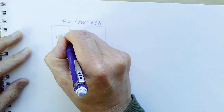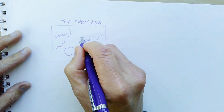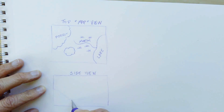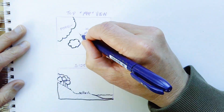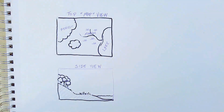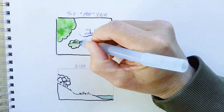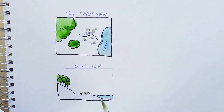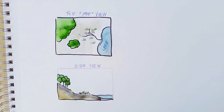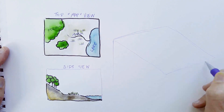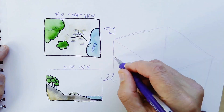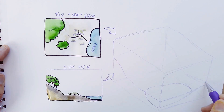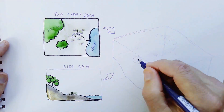Now we're ready to construct our block diagram. This is going to be a combination of the overhead map view and a side view, or profile, of the landscape you're in. Think about the shape of both of those views — you might even want to draw them out first. I find it helpful to start with the side view, the profile of the landscape, and sketch that onto the side of your cuboid form.